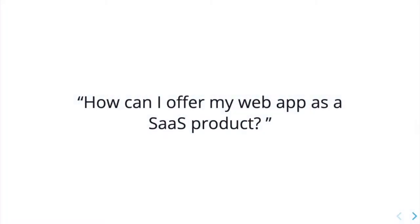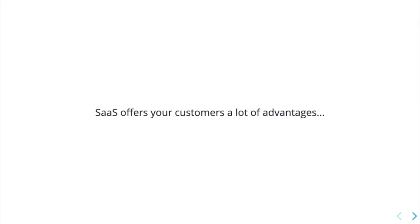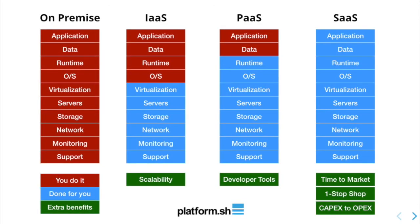But how can you offer your web application as a SaaS product? There's plenty of incentive for you and for your customers to figure out how to deliver a SaaS product. By alleviating all software and hardware considerations from your users, the SaaS model provides faster time to market and replaces capital costs with on-demand operating costs.